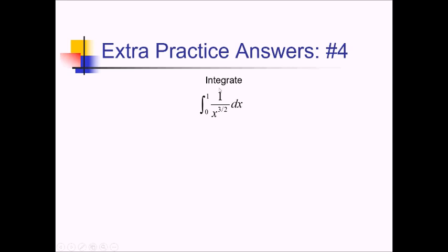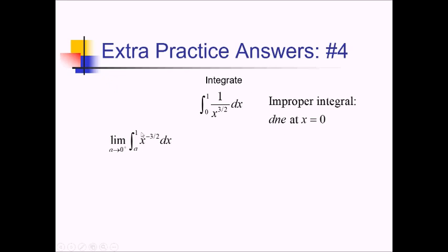On this problem, the trouble is that we have a discontinuity at x equals 0, the lower limit of integration, making this an improper integral. We have to rewrite this as the limit as a approaches 0 from the right side of the integral from a to 1, rewriting the integrand using a negative exponent to apply the reverse power rule. Taking the antiderivative, this bumps up to a power of negative 1 half; dividing by negative 1 half means multiplying by negative 2, giving us negative 2x to the negative 1 half, evaluated from a to 1. Taking out the negative 2, inside I have 1 over the square root of 1 minus 1 over the square root of a.